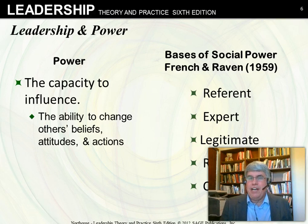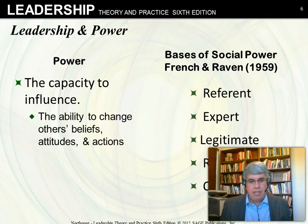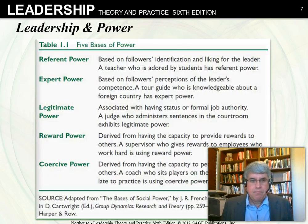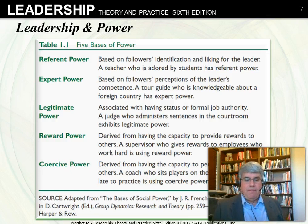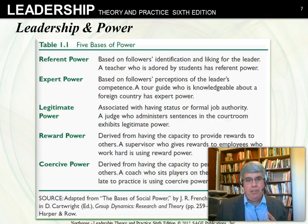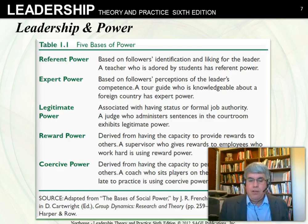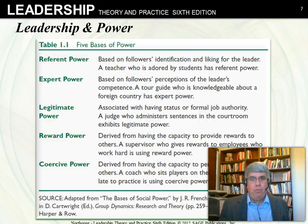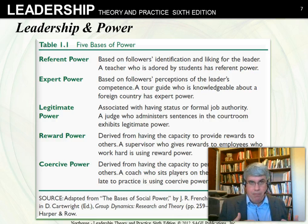French and Raven identified five bases of power: referent power, expert power, legitimate power, reward power, and coercive power. Referent power is basically relationship power — sometimes people like you and want to please you, value your friendship and your character. People want to do what you want because they like you. An example is a teacher who is adored by students — those students want to please the teacher. That's referent power.